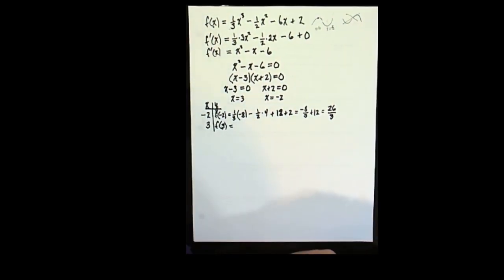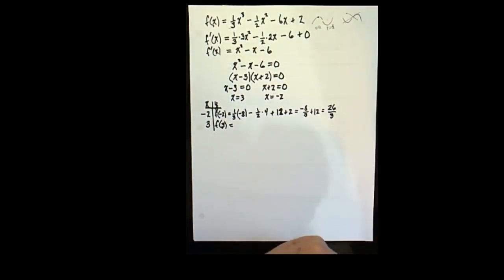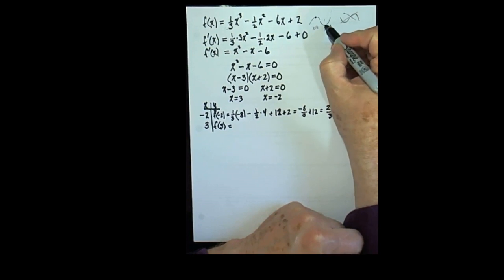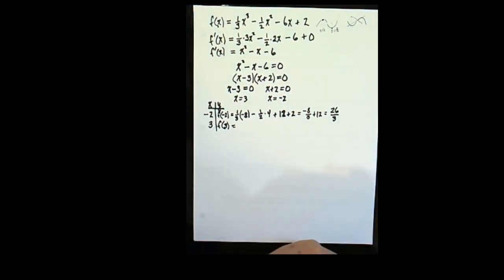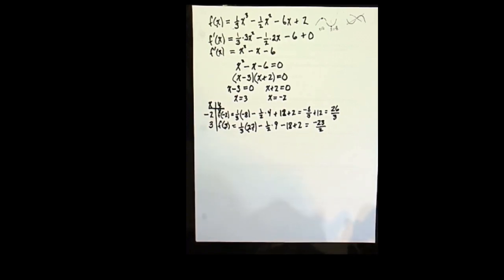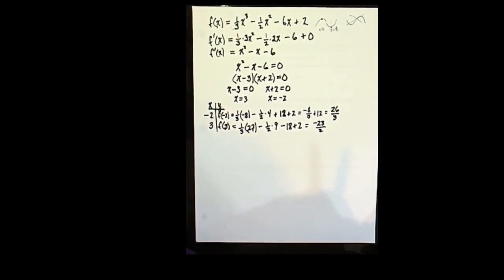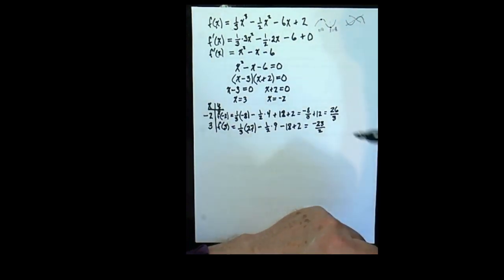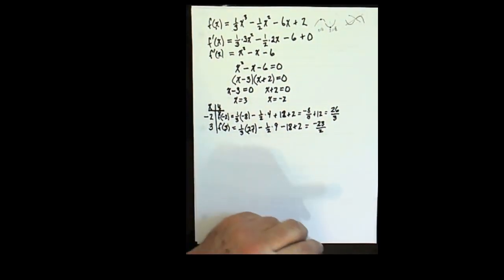So we're also interested in knowing the y value when x is 3, so that we can find this point on the curve. We plug in 3 for the function and solve that calculation. Double check my calculations, but I think it's negative 23 halves. If it had been negative 24 halves, that would be down at negative 12 for the y value of this. So it's a little less than negative 12 down.